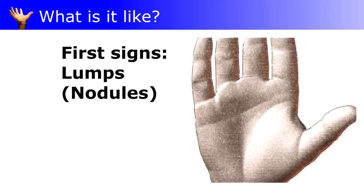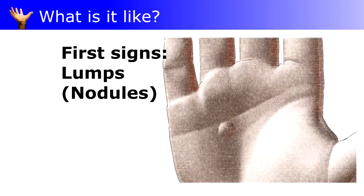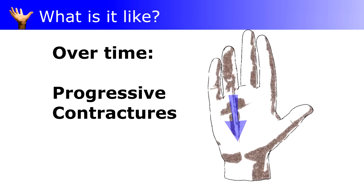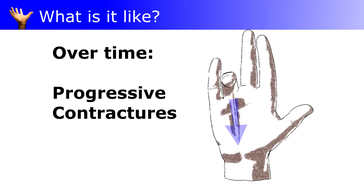It usually starts with two things. One is lumps in the palm. The other is what feel like strings inside the palm running up to the fingers. These strings slowly tighten over months or years, bending the fingers and they can't straighten out.